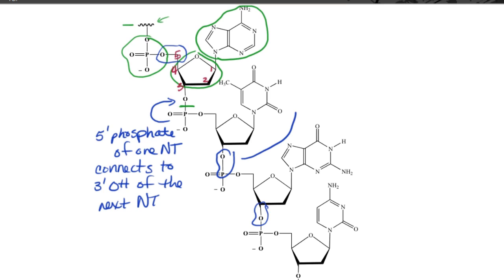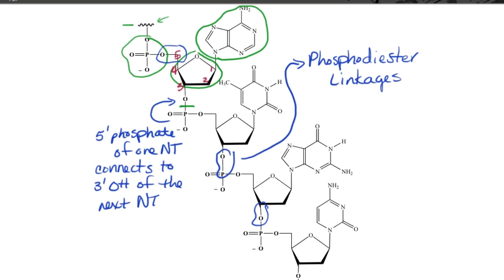All of these connections have a name — they are what we call phosphodiester bonds or phosphodiester linkages. If we are hooking together millions of these, you would have quite a lot of phosphodiester linkages.